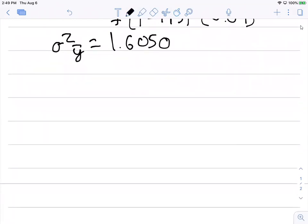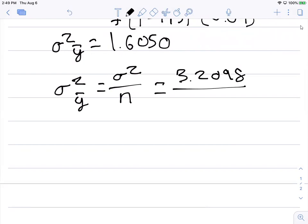Now that's important, but here we want to eventually calculate what we'll call the standard error or the standard deviation of y-bar. And so we know that sigma squared sub y-bar is equal to the variance divided by how many samples we have. And so the variance from our previous calculation was 3.2098, and we know that we have two samples. And so that's going to equal 1.6050, just what we found in the previous statement.